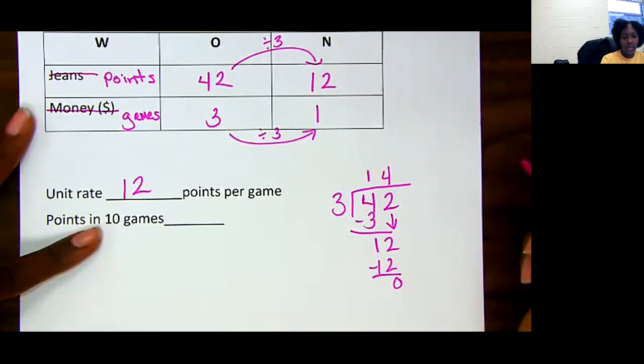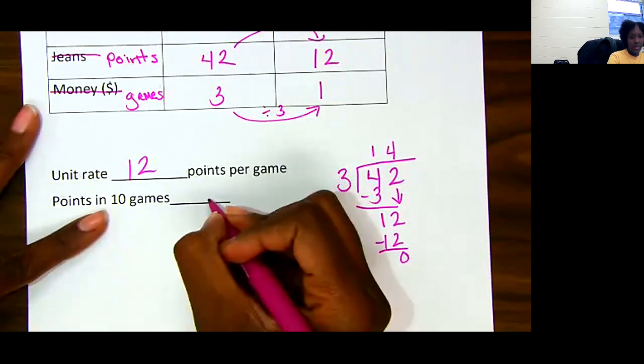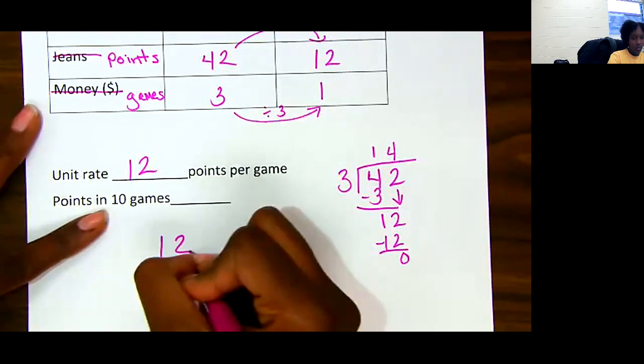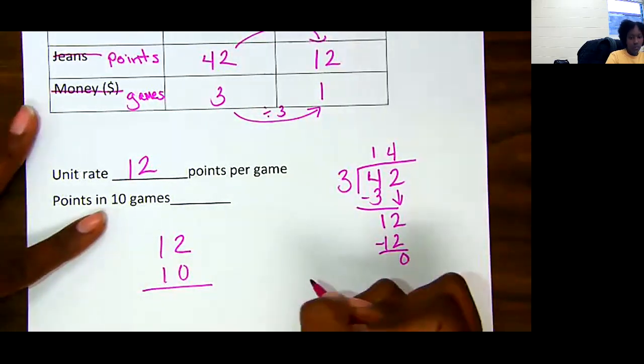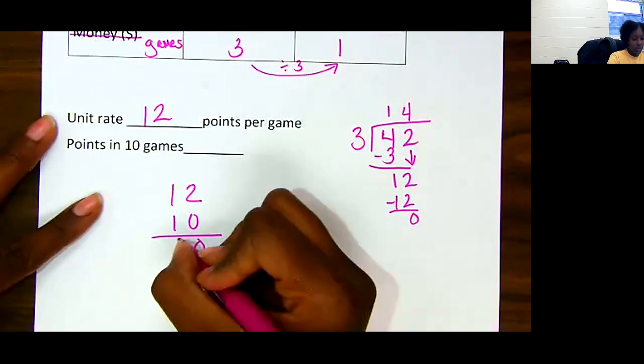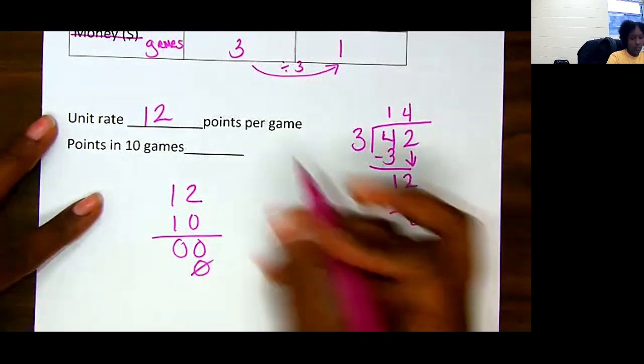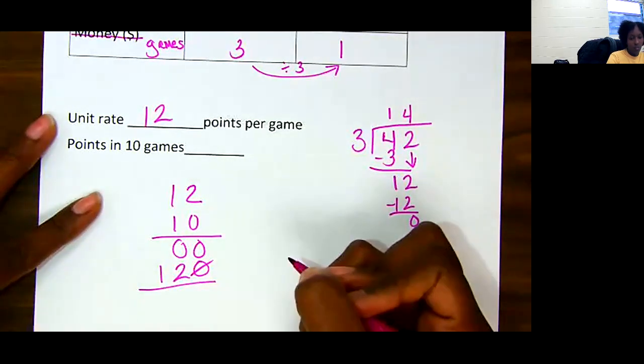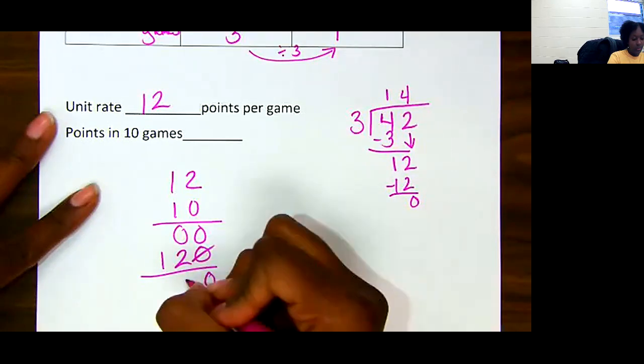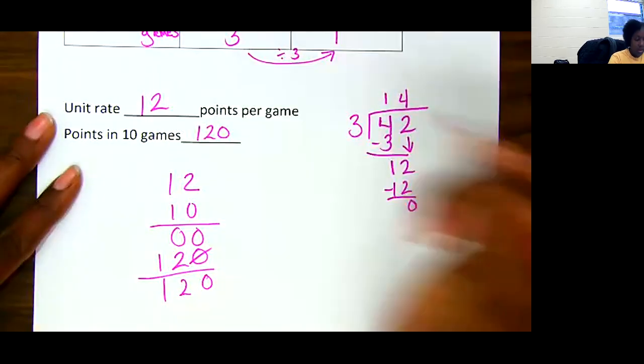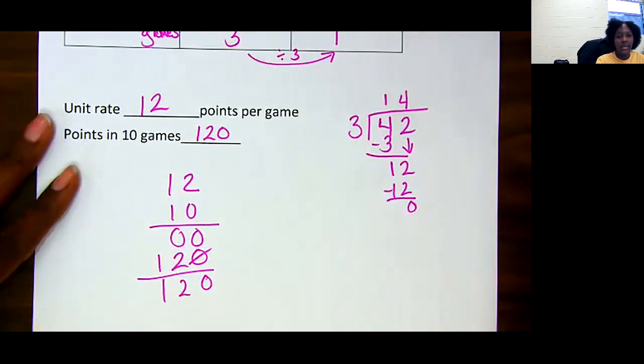Now, we need to take it to 10. How many points would they make in 10 games if they follow that same logic? So we need to do 12 times 10. 0 times 2 is 0. 0 times 1 is 0. 0 plus 1. 1 times 2 is 2. 1 times 1 is 1. Add it up: 0, 2, 1. So they would score 120 points in 10 games.